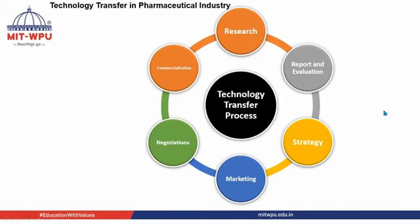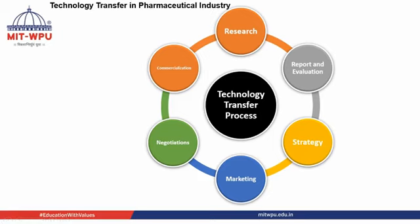These are the components of technology transfer in the pharmaceutical industry. It talks about research, then reports and evaluation — we always create reports and continuously evaluate them. After that, we make a strategy: how we can bring the formula and go to manufacturing sites for development. Strategy is very important. After strategy, we have to think about marketing, because whenever you do any innovation and invention, that invention has to have certain value in the market; then only we can go with commercialization, otherwise the product will not survive in the market. We need to always think about risk-benefit ratio, which we call QRM — Quality Risk Management.